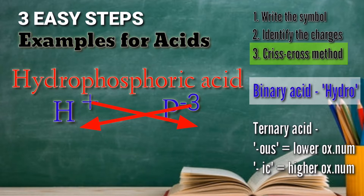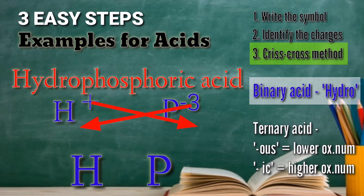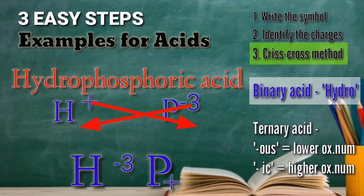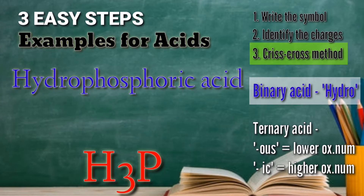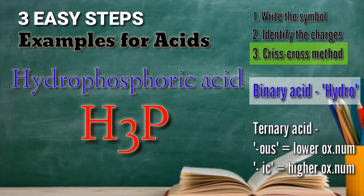The criss-cross method is just exchanging the oxidation numbers so they become the subscripts. Therefore, the positive 1 will be the subscript of phosphorus, and the negative 3 will be the subscript of hydrogen. We should remove the positive and negative signs because they are now subscripts.